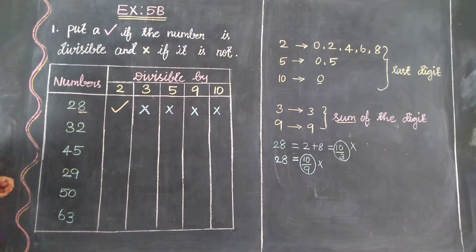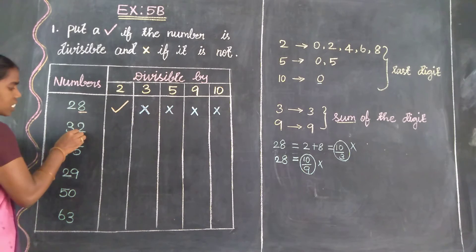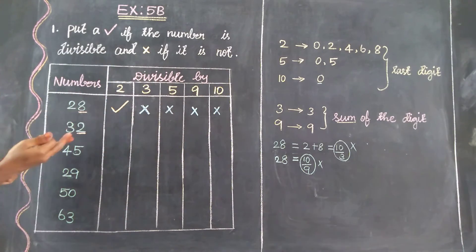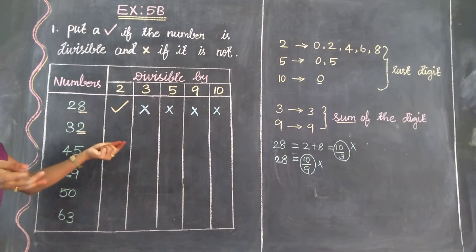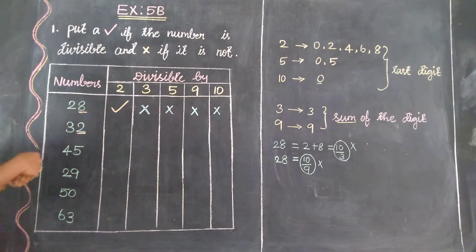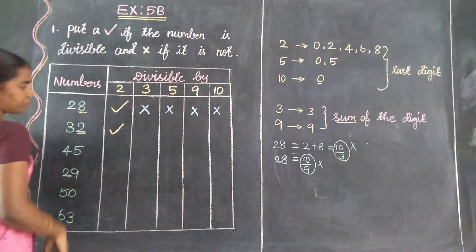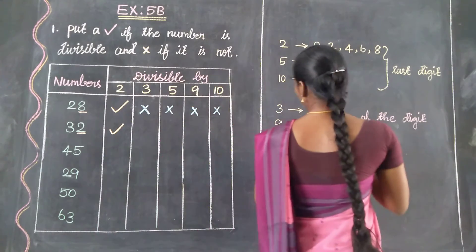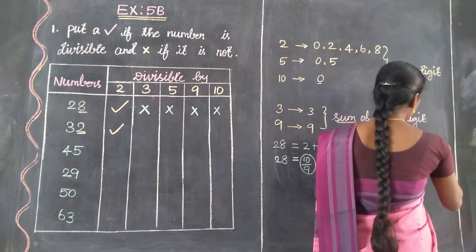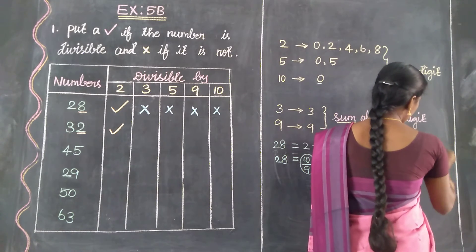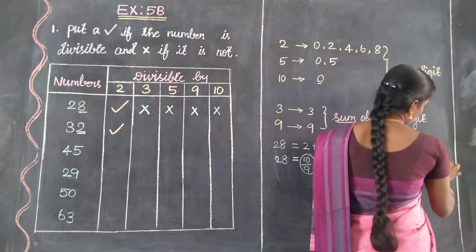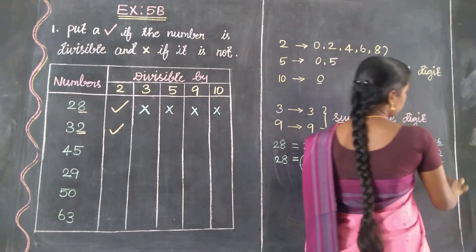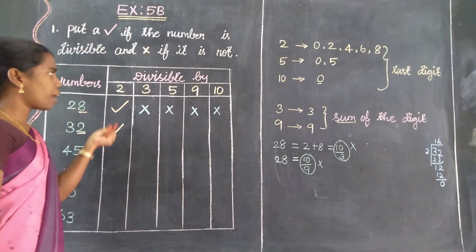Next number is 32. Find out divisibility by 2 — check the last digit. The last digit of 32 is 2. The rule for 2 says last digit must be 0, 2, 4, 6, or 8. Last digit is 2, so 32 is divisible by 2. How many times? 16 times in the 2 times table equals 32. So 32 is divisible by 2.